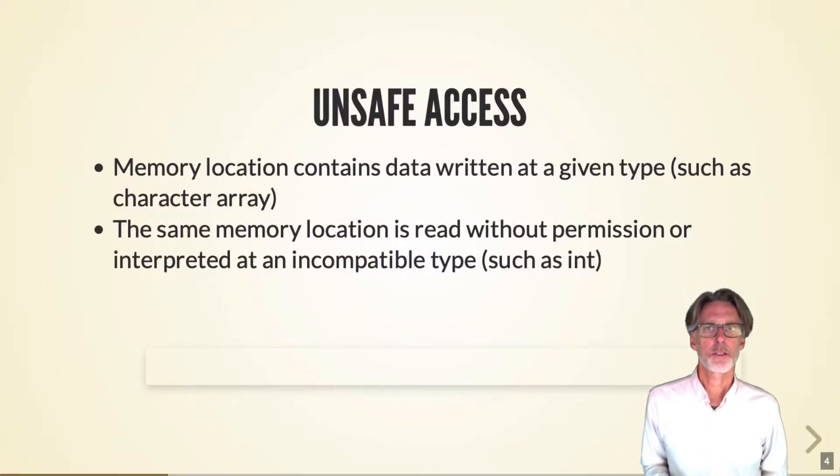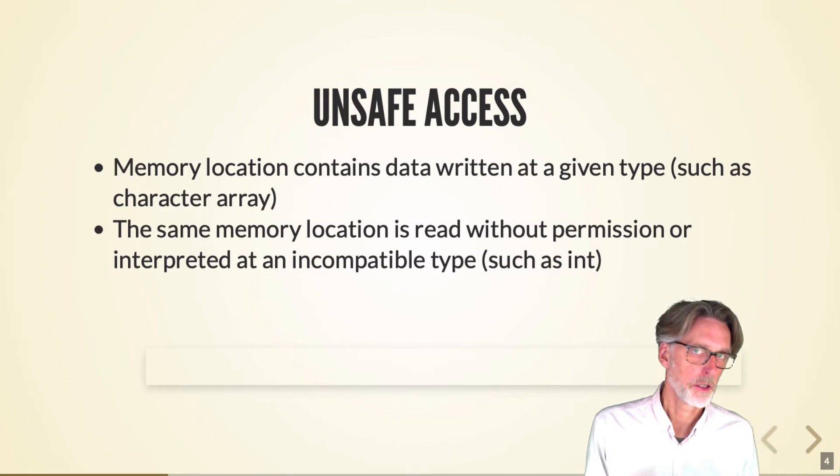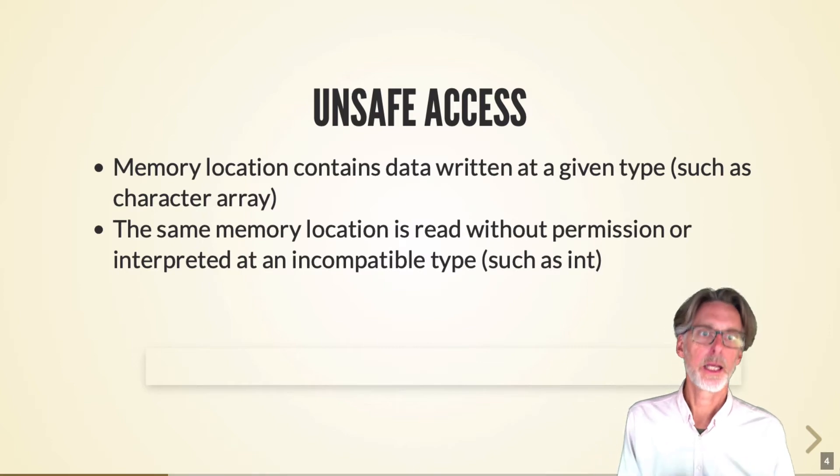What we're seeing here is what's called unsafe access. So I have a memory location where I'm writing data at a certain type, like a character array or an integer. And then the same memory location is being written out in a way that violates the integrity of the program in some way. So either we don't have permission to read that area or we're simply interpreting the bits in an incorrect way, such as taking a character array and trying to treat it like a string.